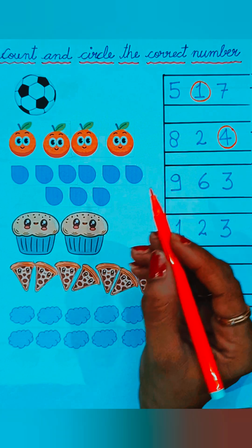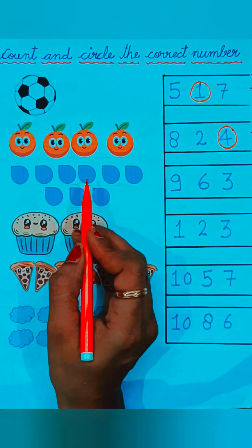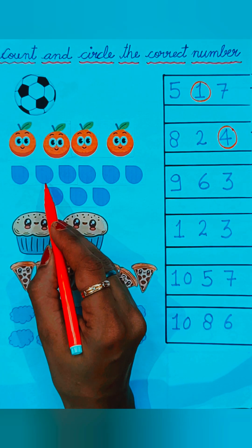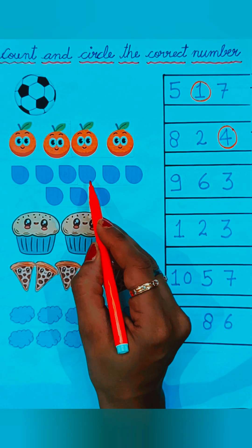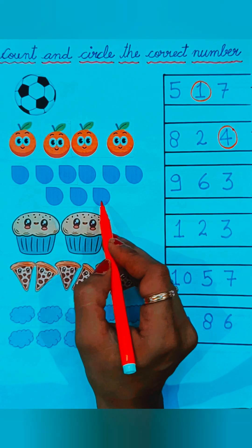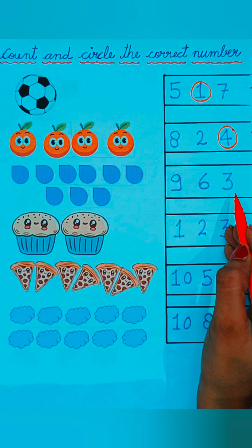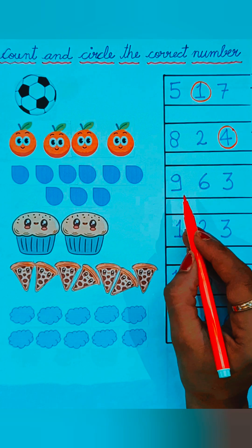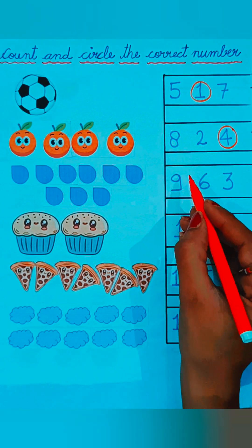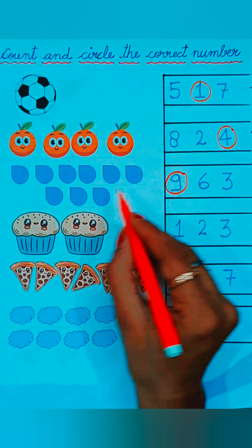See the drops of water. Let's count: one, two, three, four, five, six, seven, eight, and nine — nine drops are given here. So which number will we circle? We will circle number nine. Three numbers are given — nine, six, and three — nine is the correct number.